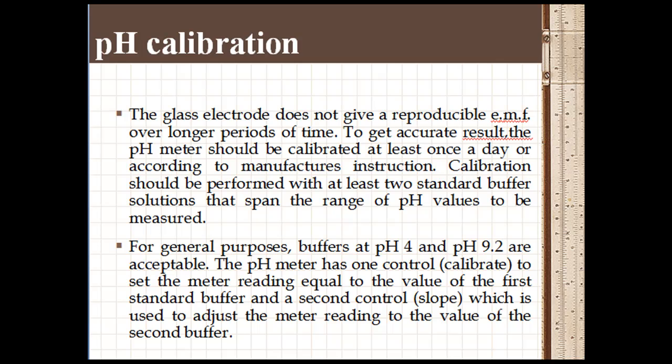For general purposes, buffers at pH 4 and pH 9.2 are acceptable. The pH meter has one control to set the meter reading equal to the value of the first standard buffer and a second control which is used to adjust the meter reading up to the value of the second buffer.